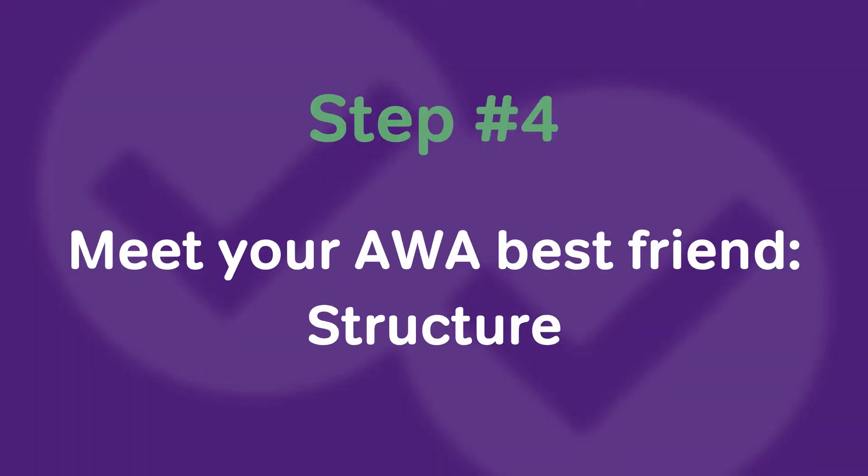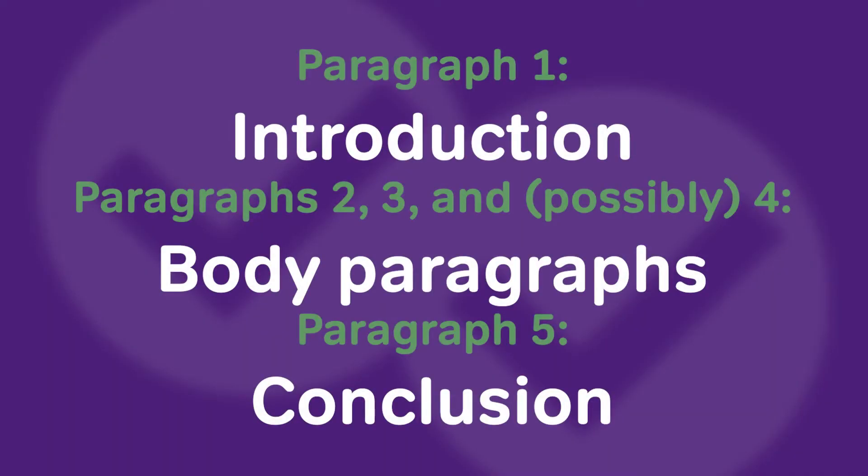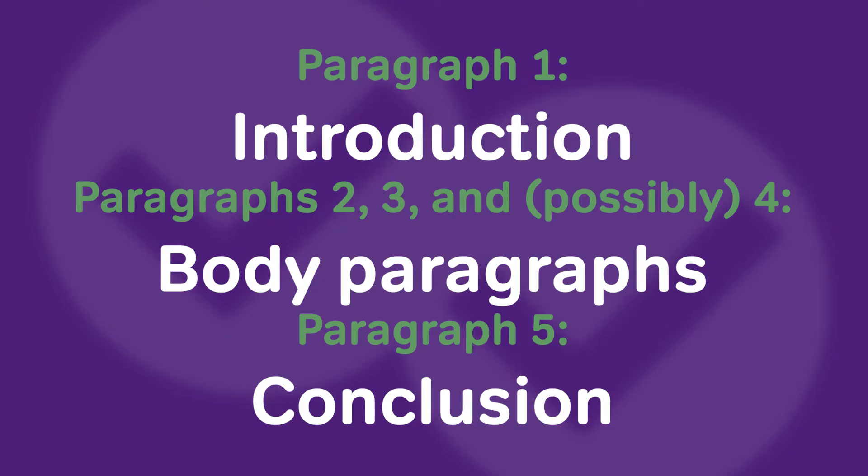Step number four: meet your AWA best friend, structure. You just calmed down your ping pong brain long enough to isolate two or three points in favor of a position, and you're ready to just unleash your fingers on those keys. Not so fast. Before you start writing your essay, make sure you have a game plan in mind for how you're going to structure your thoughts. I highly recommend that you follow what we call the five paragraph essay structure. Paragraph one is your introduction. Paragraphs two, three, and possibly four are your body paragraphs. And paragraph five should be your conclusion. This structure is very popular in most academic writing and for good reason — it allows you to really structure your thoughts on the page and helps your reader stay aboard your train of thought as you walk them through the major points.